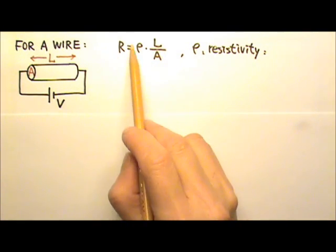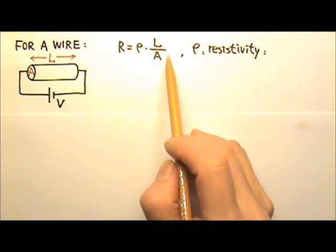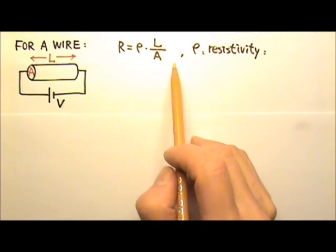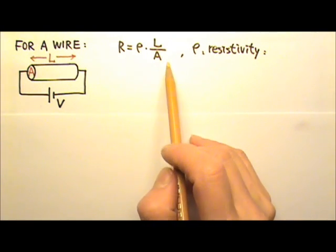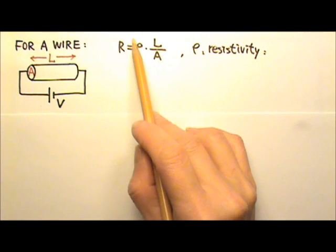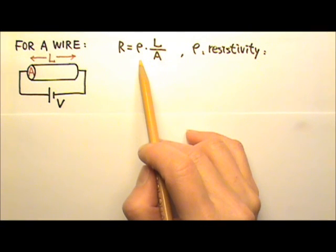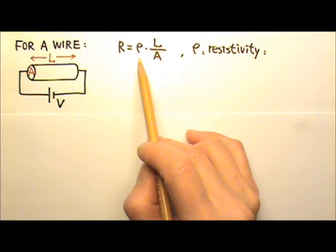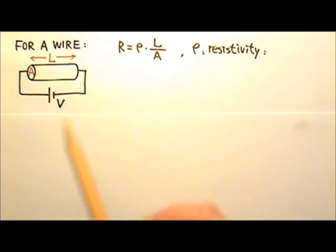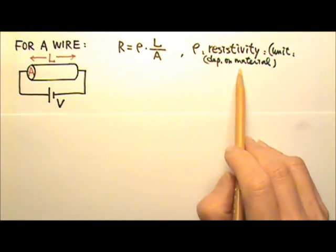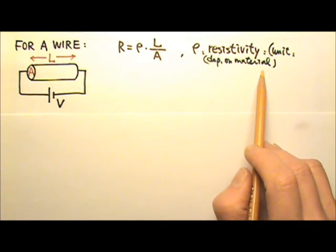So the resistance of a wire depends on the size of the wire and the resistivity of the wire. The resistivity depends on the material of the wire.